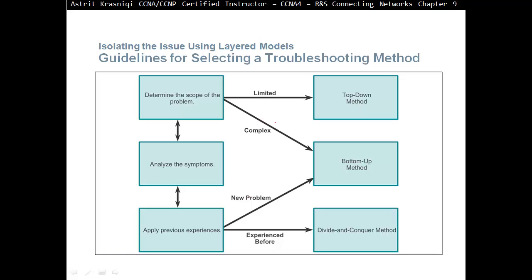Guidelines for selecting a troubleshooting method. Determine the scope of the problem. If the scope of the problem is limited, it's a very small problem like you can't access a website or you can't access email, then use a top-down model. If the problem is complex, then you should go for a bottom-up method. Then analyze the symptoms. If you don't have any previous experience, if it's a brand new problem, then you would go for the bottom-up approach. If you have experience before, then you can use the divide-and-conquer method: start from layer 3 and then move up or down the layers.